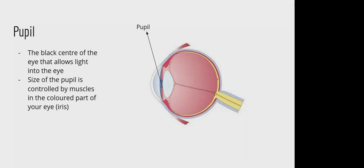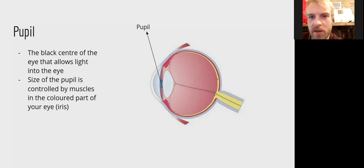The pupil getting larger and smaller does have names. When the pupil becomes larger, that's known as mydriasis, and that tends to happen in environments where light is quite low — in a particularly dark environment, the pupil can start to get larger to enable more light to get into the eye sufficiently. The opposite of mydriasis is miosis, and that's when the pupil becomes smaller and contracts, which happens when there's too much light around.